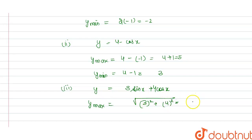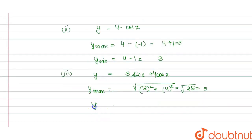is 3 square plus 4 square, that is 25, under root 25, that is 5. And minimum value is minus times of 3 square plus 4 square, so this is minus 5.